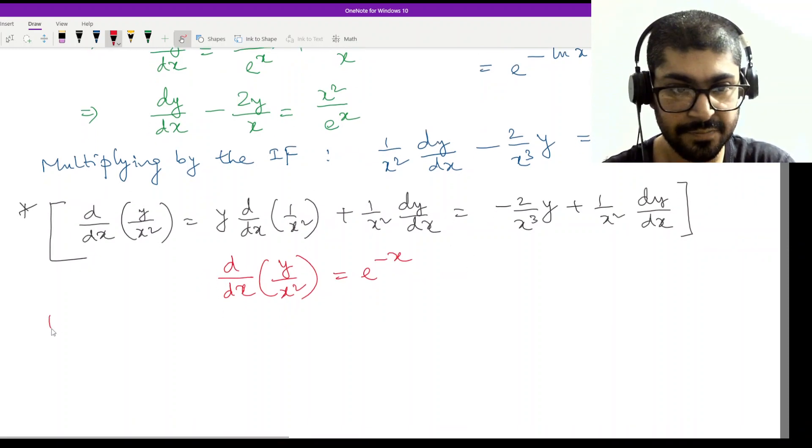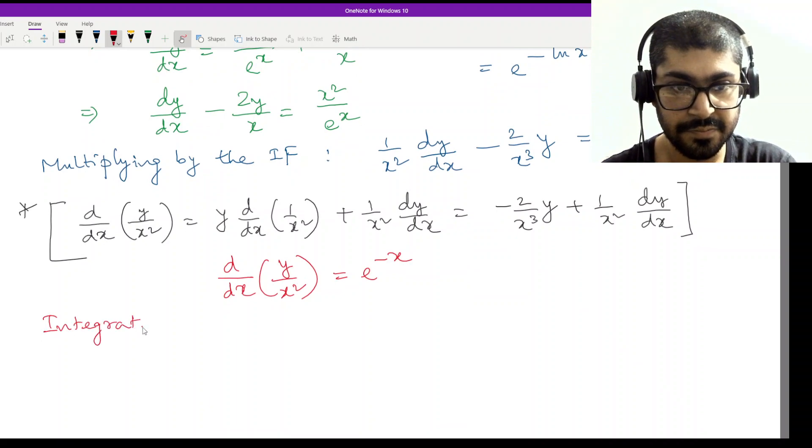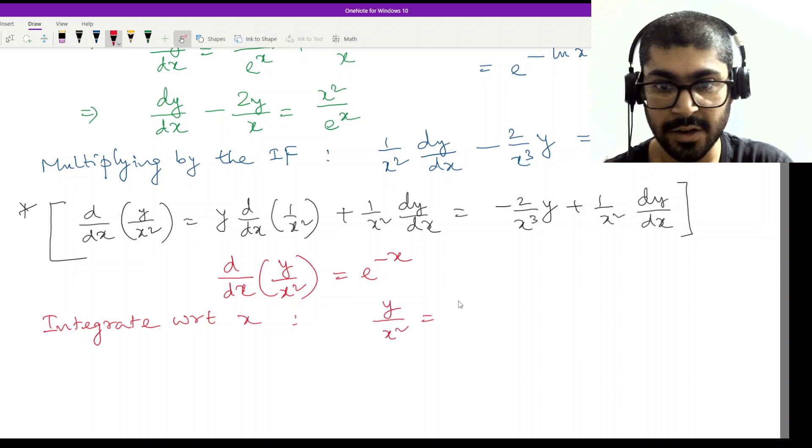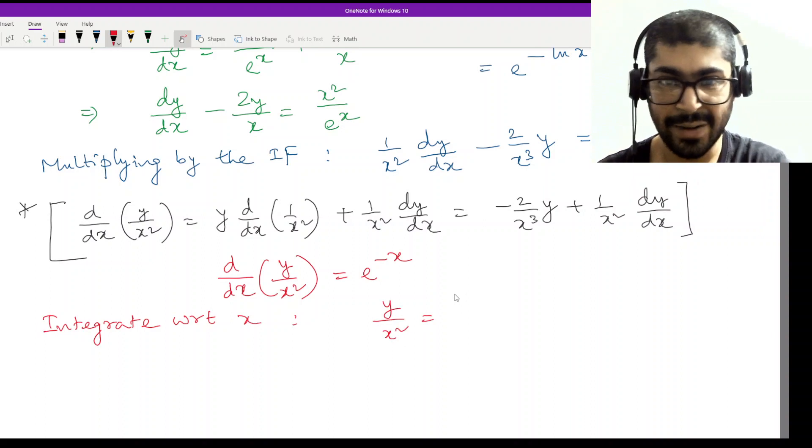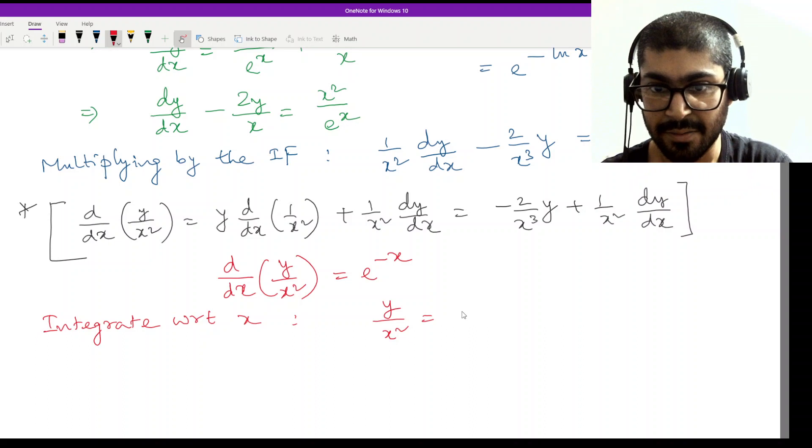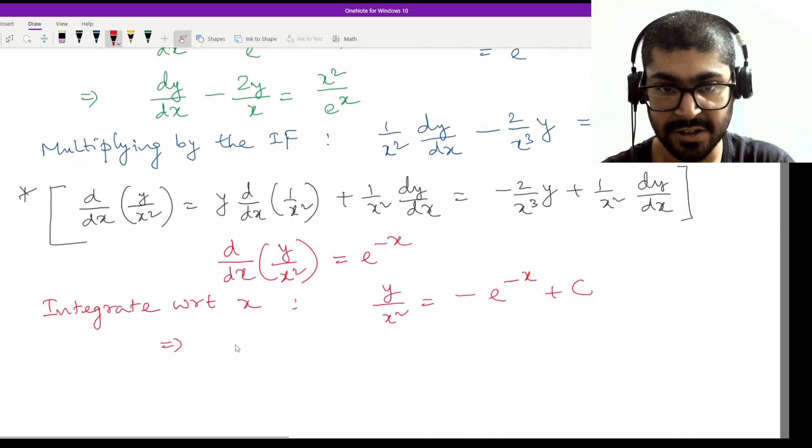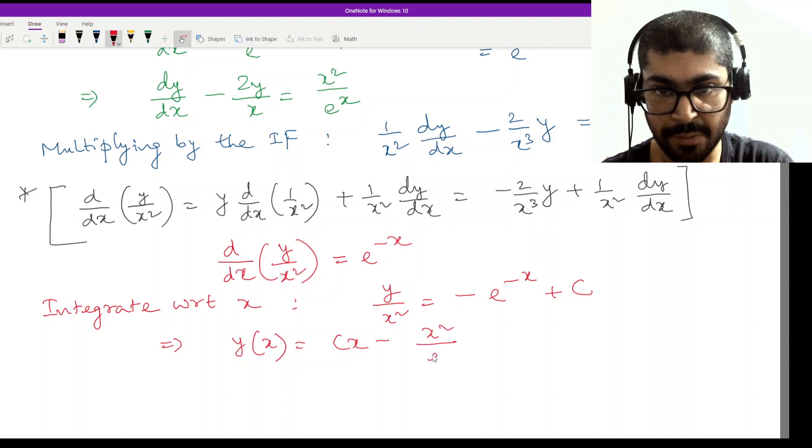I can just simply write derivative of y/x² equal to e^(-x). That is our final differential equation. Now if I integrate it with respect to x, I have y/x² equal to -e^(-x) + c. The constant is there. So the final solution is y(x) = cx - x²/e^x.